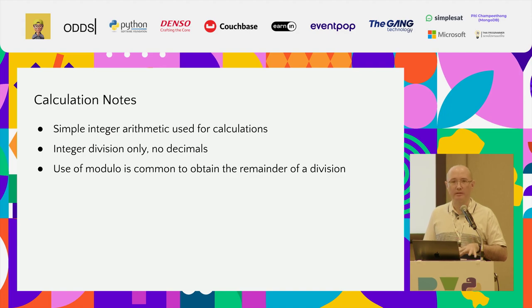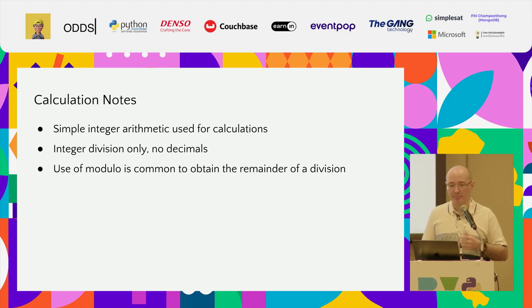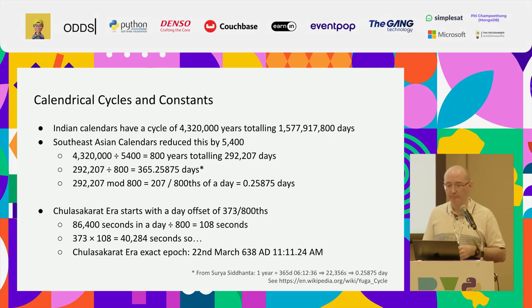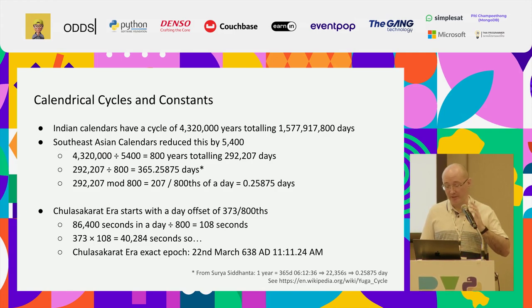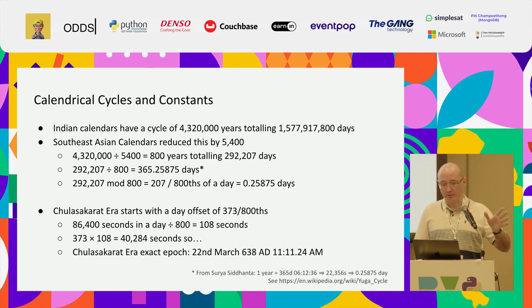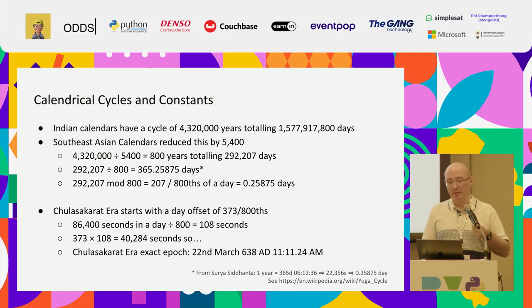When calculating these calendars, the mathematics is very simple — no trigonometry or planetary position calculations. It's all integer arithmetic and integer division, using modulo for getting remainders. The Indian calendars this developed from have a cycle of 4.32 million years with 1.577 billion days. In Southeast Asia these calendars were simplified by dividing by 5,400, giving 800 years and again that figure of 292,207 days.